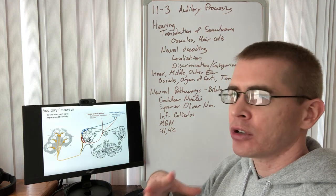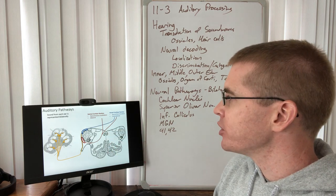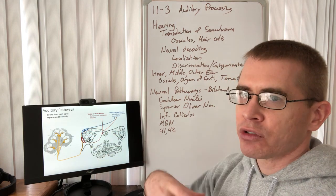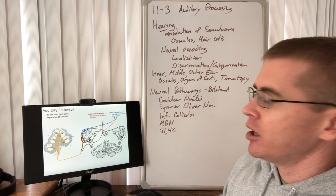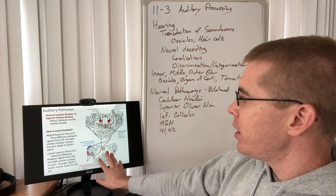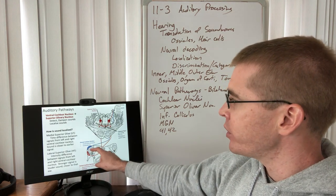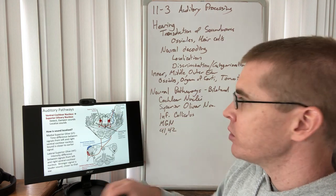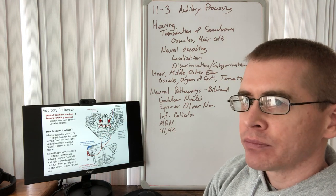For that reason, the ventral cochlear nucleus sends bilateral projections up the brainstem — you can see the bilateral fibers going up. The dorsal cochlear nucleus is responsible for categorizing and discriminating types of sounds, and that information heads up contralaterally. So these tracts are moving up the brainstem, with the cochlear nuclei in the medullary portion sending information upward.